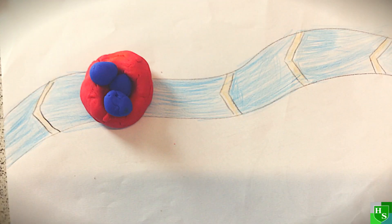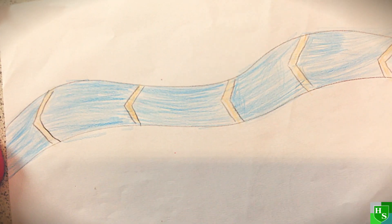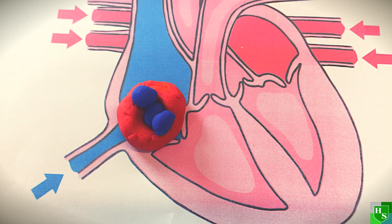Back at the heart, it goes through the right atrium, then the right ventricle. After that, the cells go from the pulmonary valve.